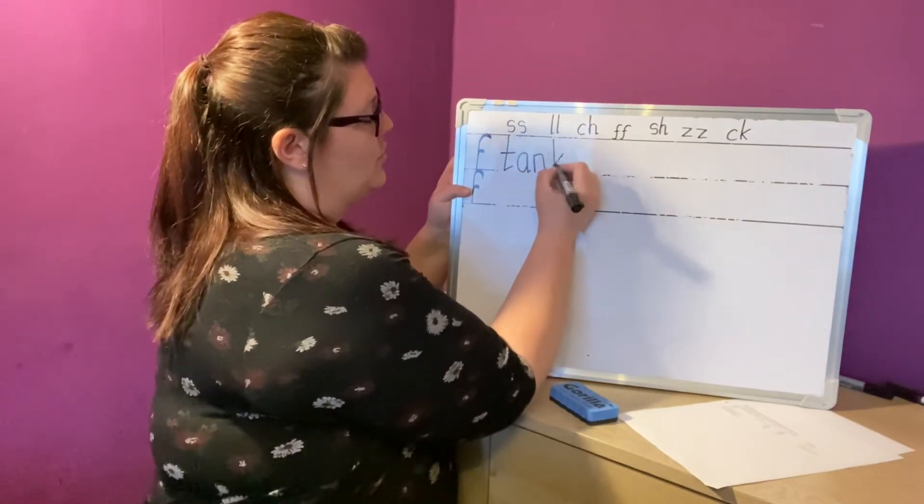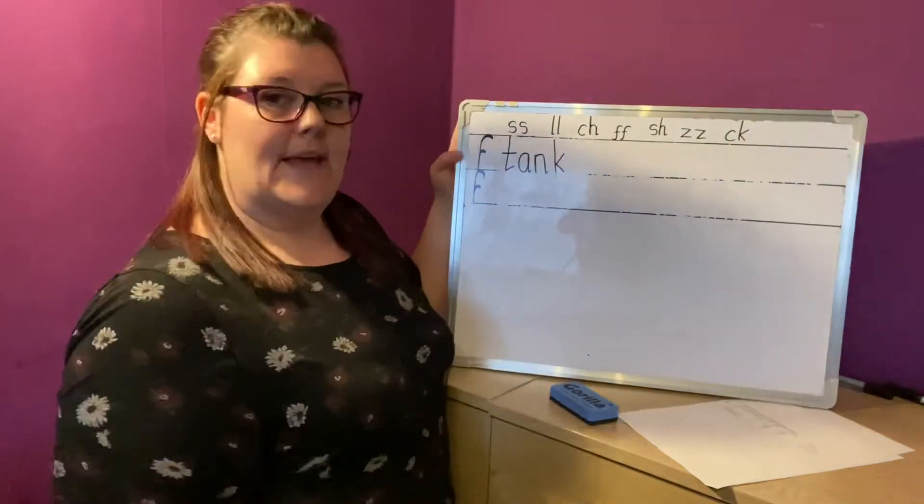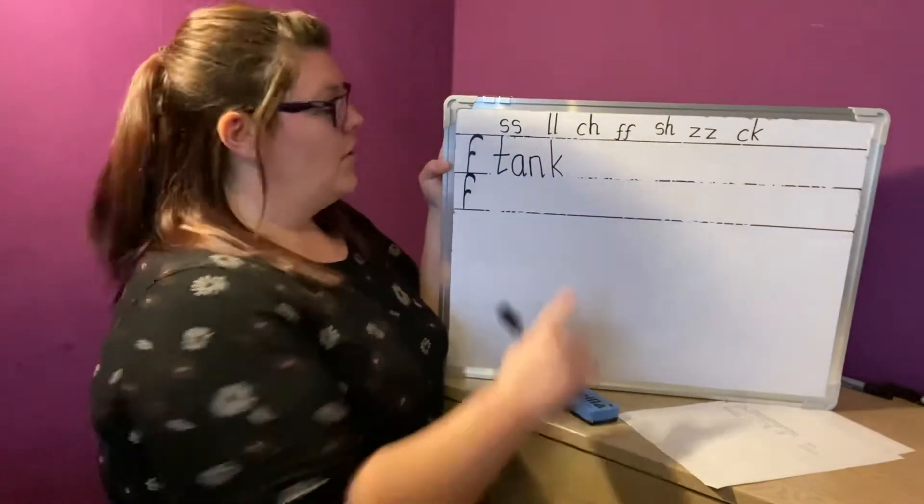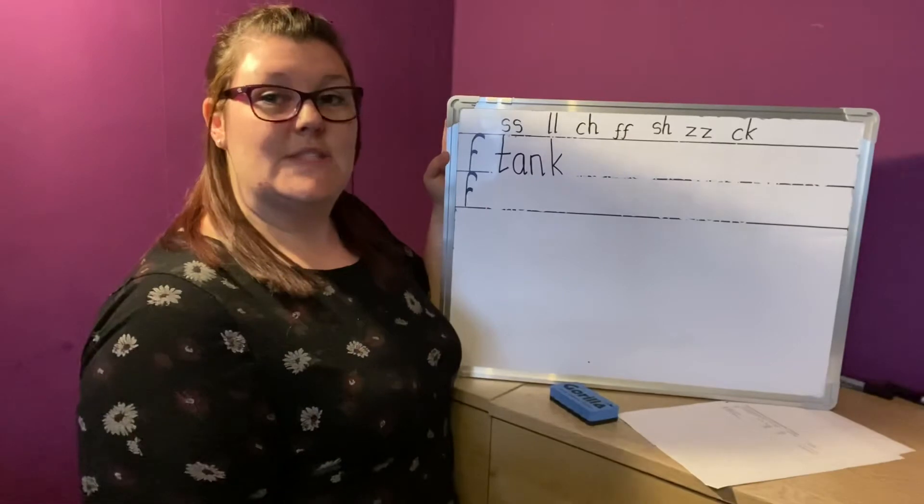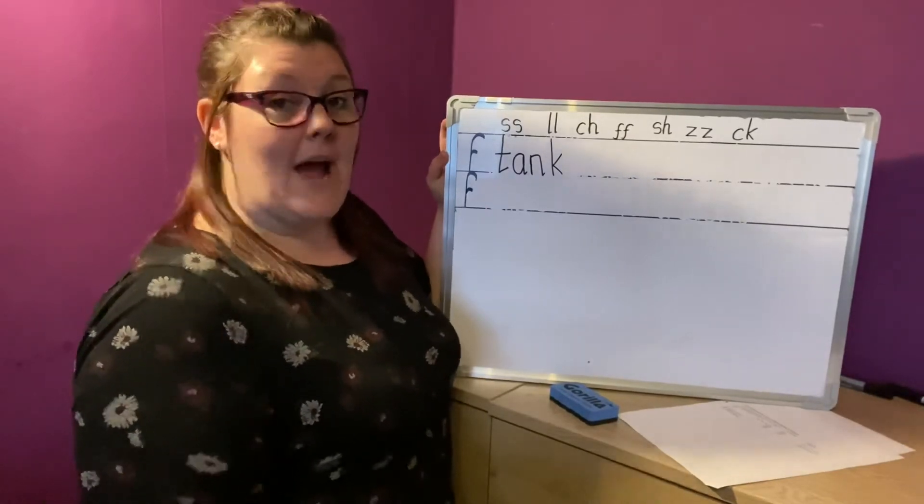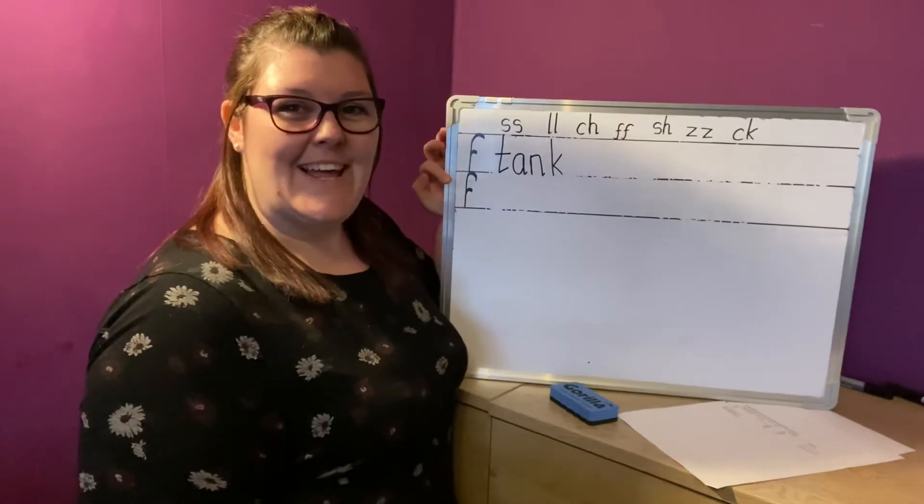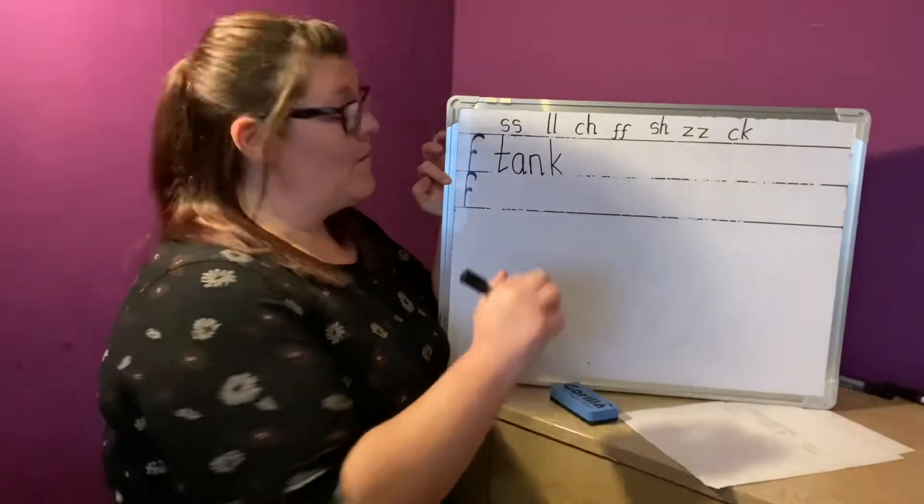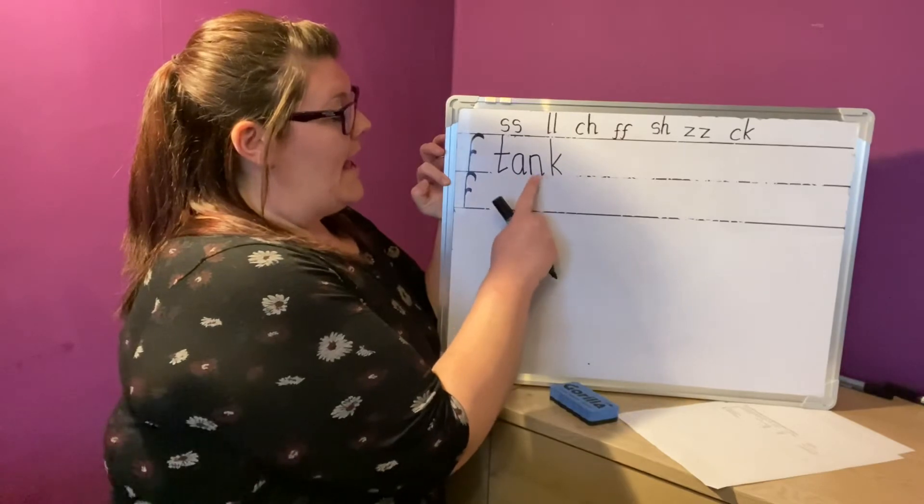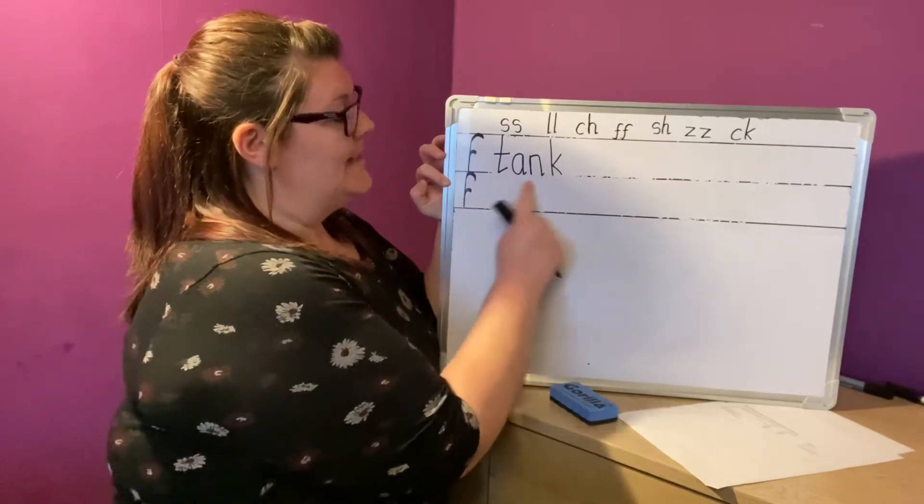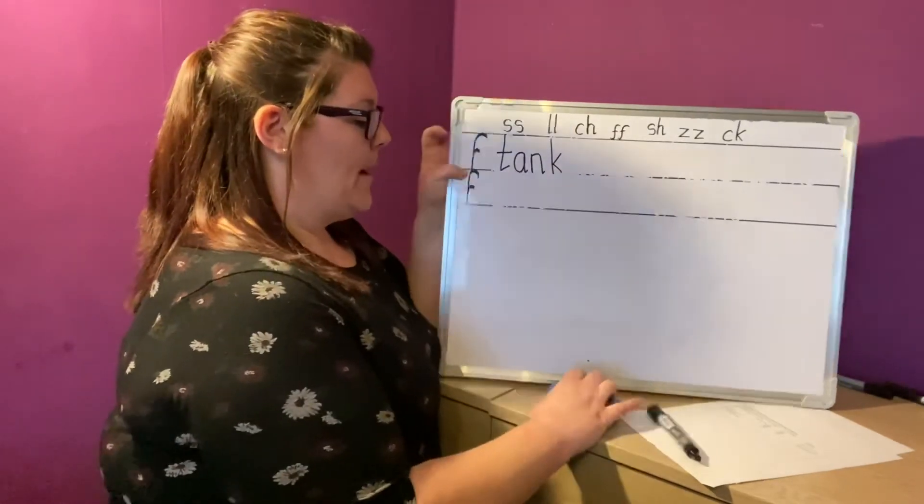Tank. And it's the tall ck that's at the end of tank. If you got the short one, it's fine because it still says tank. But now we know that it's the tall one in that word. Let's read it back. Check that you all got the right number of sounds. T-A-N-K. Tank. Well done.